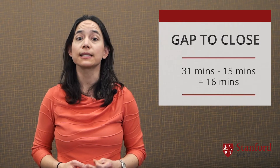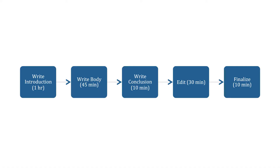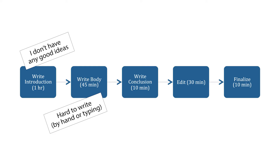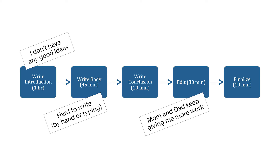Step two: we write our problem as a gap. We want to decrease time spent writing by 16 minutes, from an average of 31 minutes per day to 15 minutes per day. Step three: we start our brainstorm by moving the problems we identified into our five whys. Why is it taking 31 minutes instead of 15? Because I don't have any good ideas. Because it's hard to write. Because mom and dad keep giving me more work.